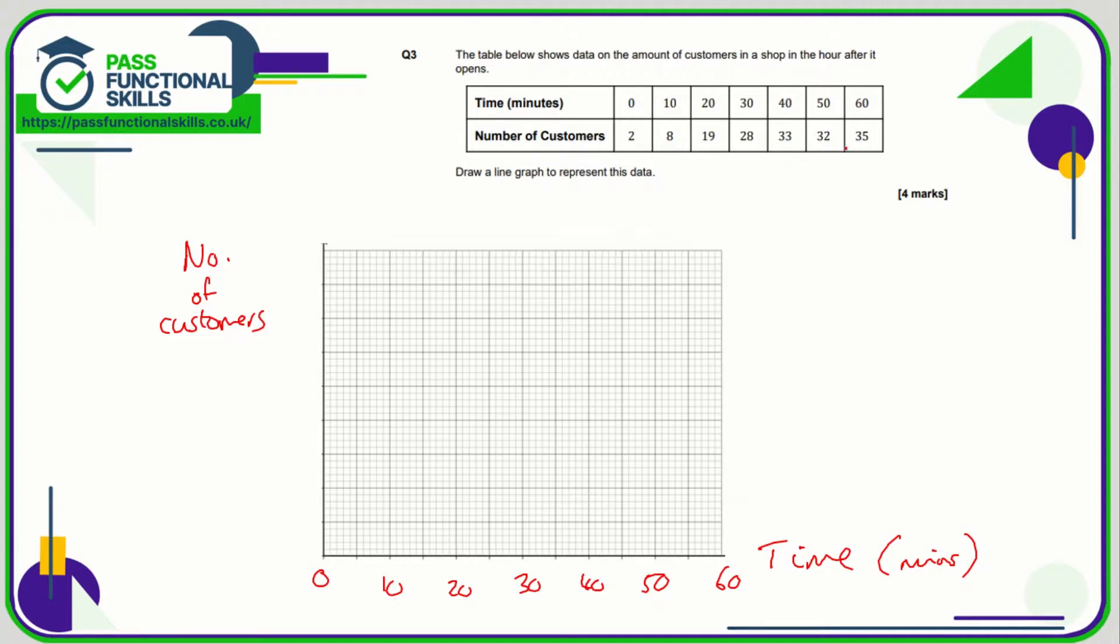For customers we're going up to 35, so I think if we go up in 5s that would be the best thing to do. So that's going to be 5, 10, 15, 20, 25, 30. So 0 minutes corresponds to 2 customers. 10 is 8, so here is 10 and 8 customers will be there. 20 is 19, so that's 1 less than 20, so that will be that line there. 30 is 28, so 25, 26, 27, 28.